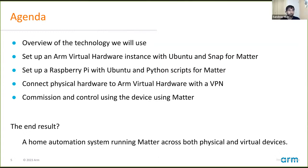Thanks Abbas. Today's Tech Talk will start off with an overview of the technologies we'll use in the demo. Then we'll set up an ARM Virtual Hardware instance with Ubuntu and the Snap for Matter package. After that, we'll set up a Raspberry Pi with Ubuntu and Python scripts for Matter, connect the physical hardware to ARM Virtual Hardware with a VPN, and use the Matter smart home protocol to commission and control the physical hardware device. The end result will be a home automation system running Matter across both physical and virtual devices.